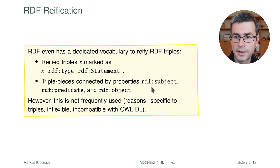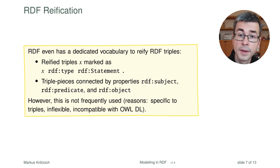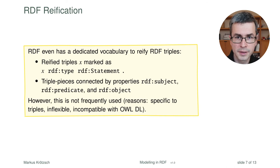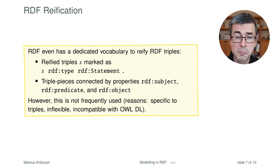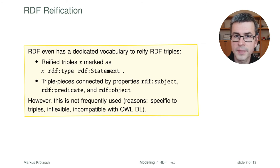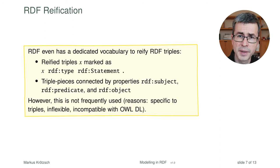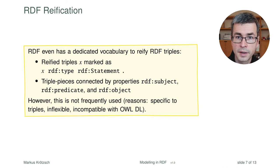This specific form of reification, even though it's called reification officially, is not frequently used. It is used relatively rarely. Some datasets have adopted the practice because it was in the standard, but there are usually better application-specific ways of doing things. It is also relatively inflexible — it only works if you want to do it for triples, not for anything else. And it is not compatible with other RDF-related W3C standards such as LDL.